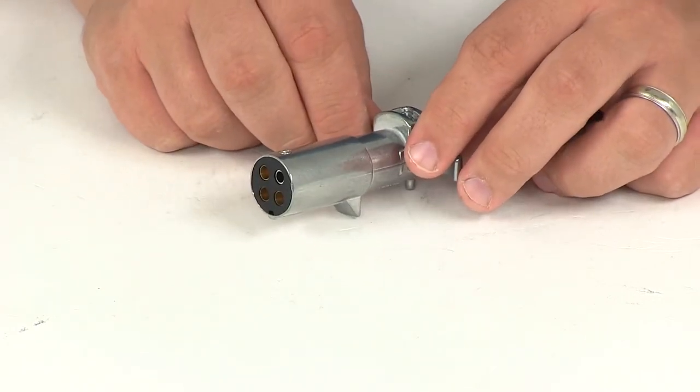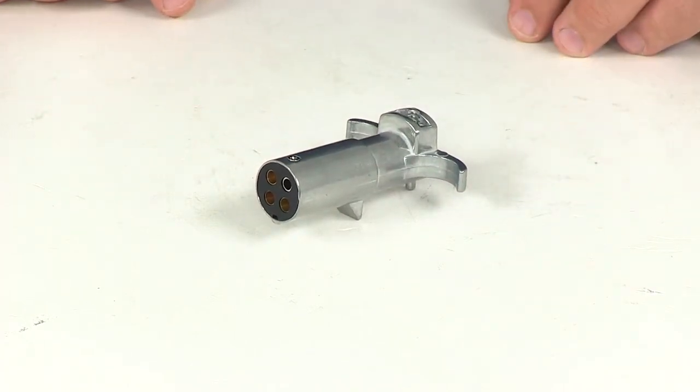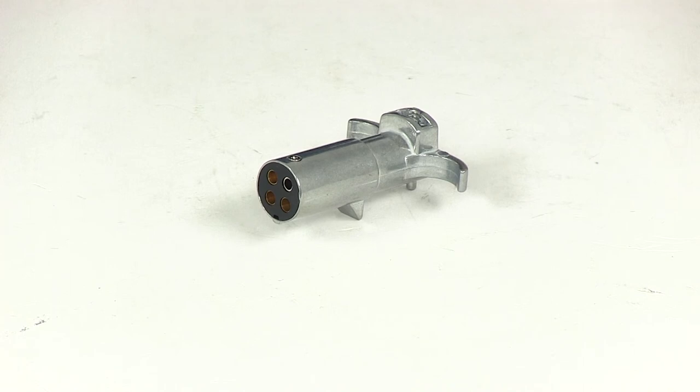That's going to do it for today's review of part number PK11402. This is the Pollock Heavy Duty 4-Pole Round Pin Trailer Wiring Connector.